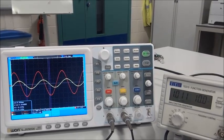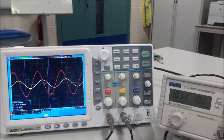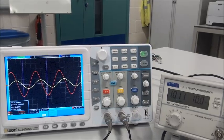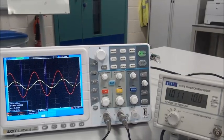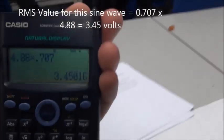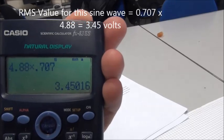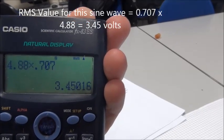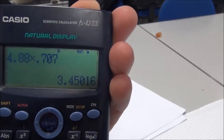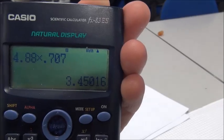To measure the RMS value, the root mean square value of any AC sine wave, it's the same procedure. The peak value times 0.707. So, going back to the calculator, the root mean square value of this sine wave will be 3.45 volts. That's the DC equivalent of the sine wave.